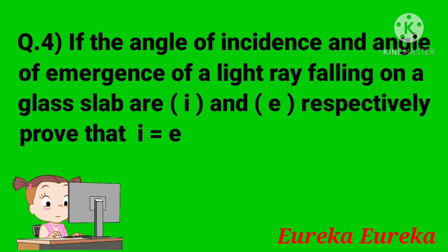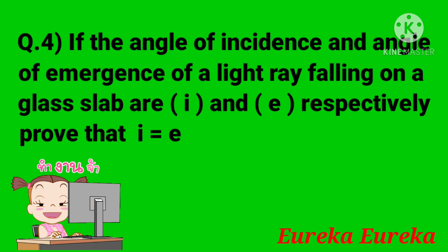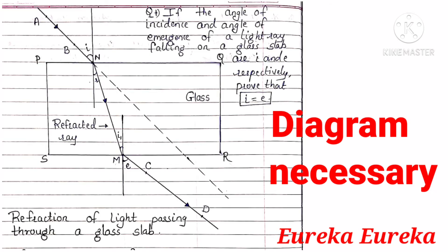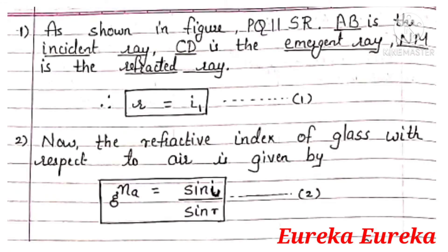The fourth question is: if the angle of incidence and angle of emergence of a light ray falling on a glass slab are i and e respectively, prove that i is equal to e. Drawing a diagram showing refraction of light passing through a glass slab is necessary. As shown in the figure, PQ is parallel to SR. AB is the incident ray, CD is the emergent ray, and NM is the refracted ray.